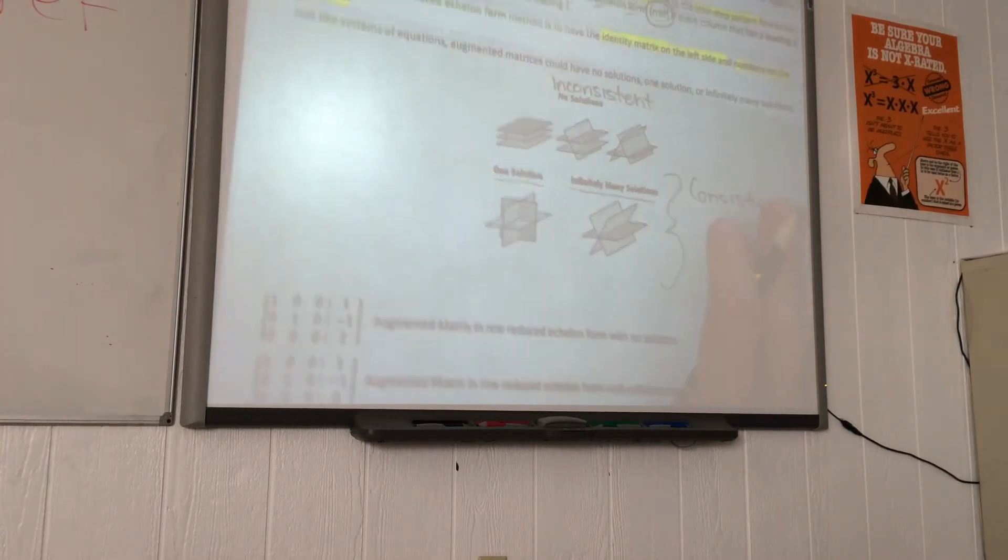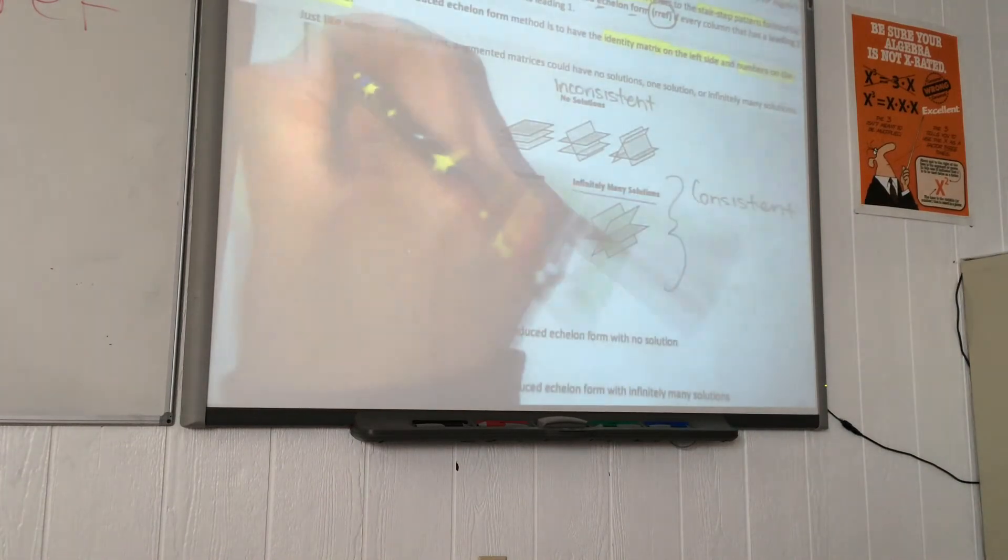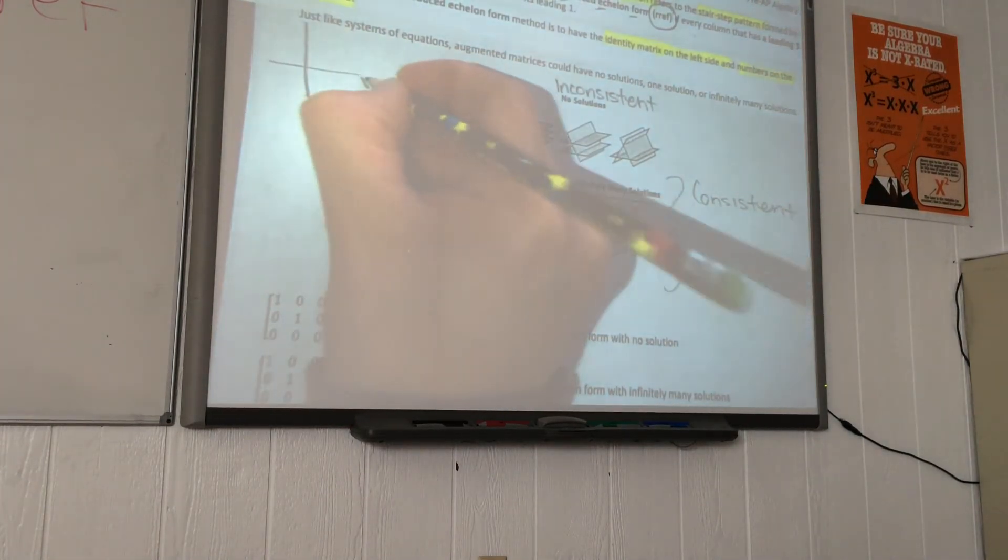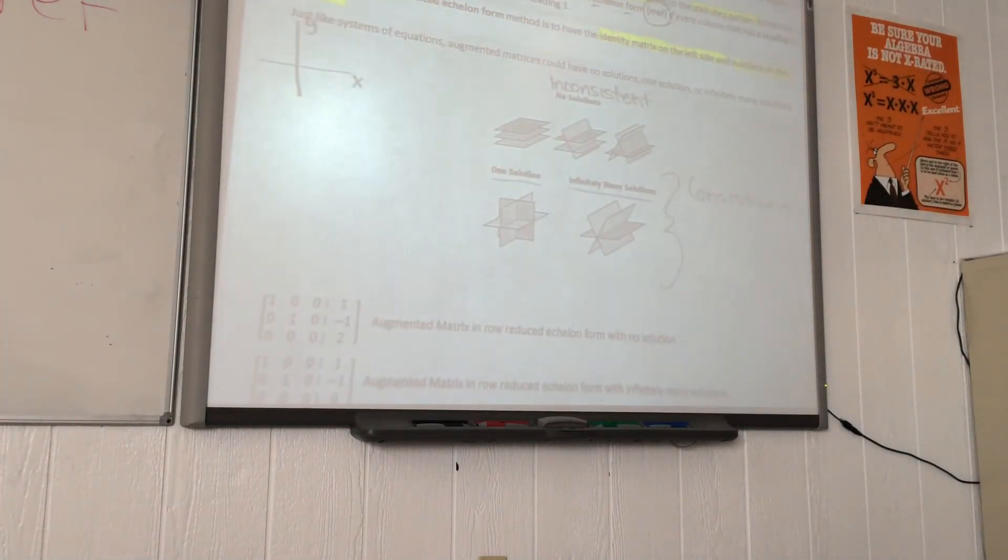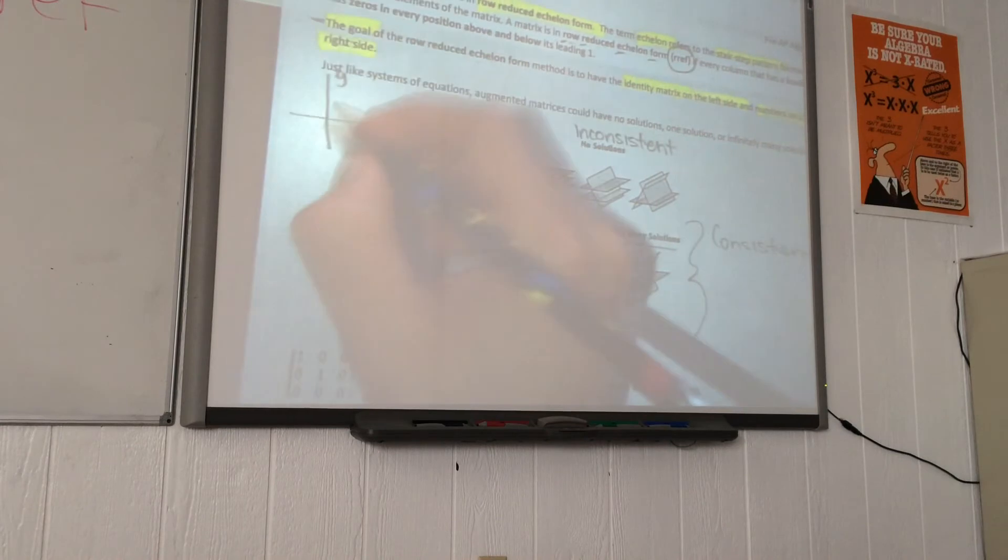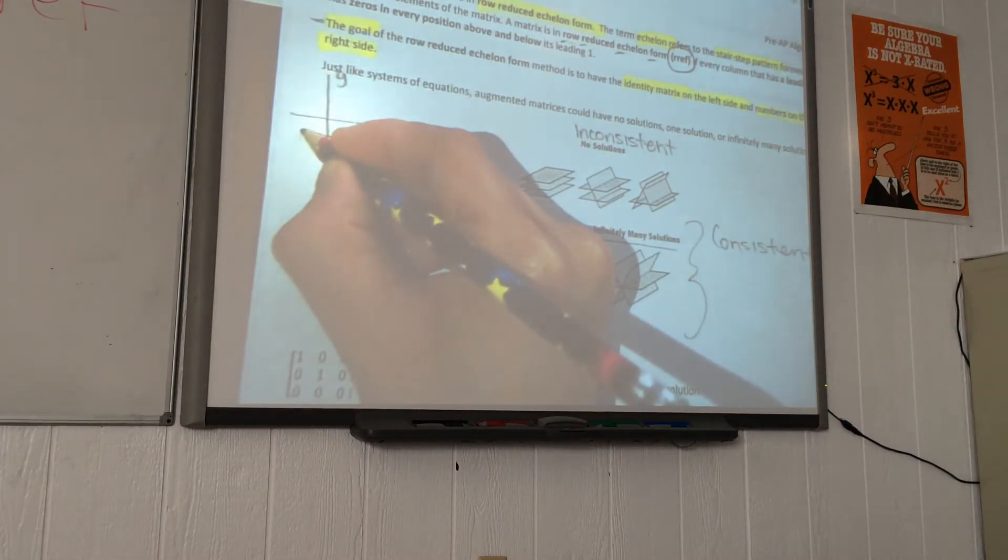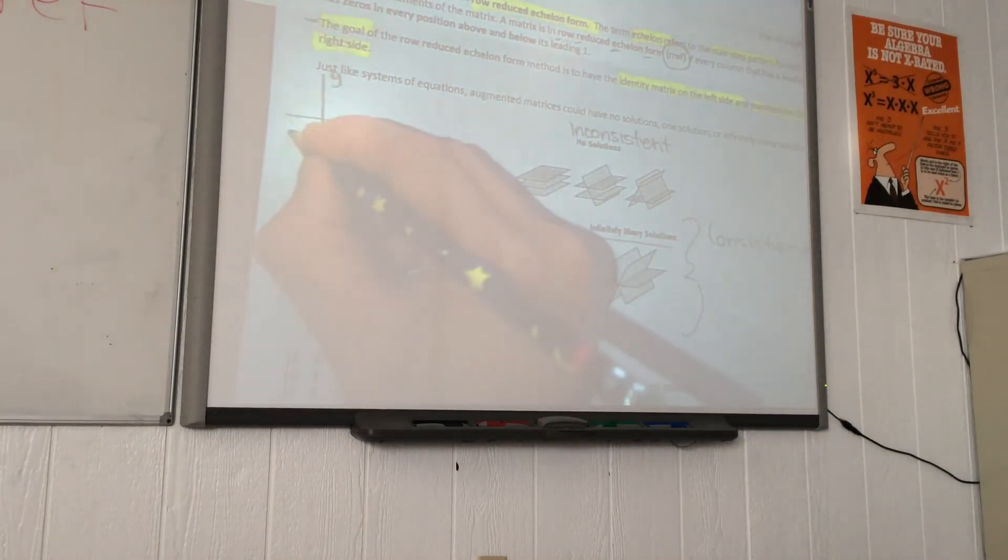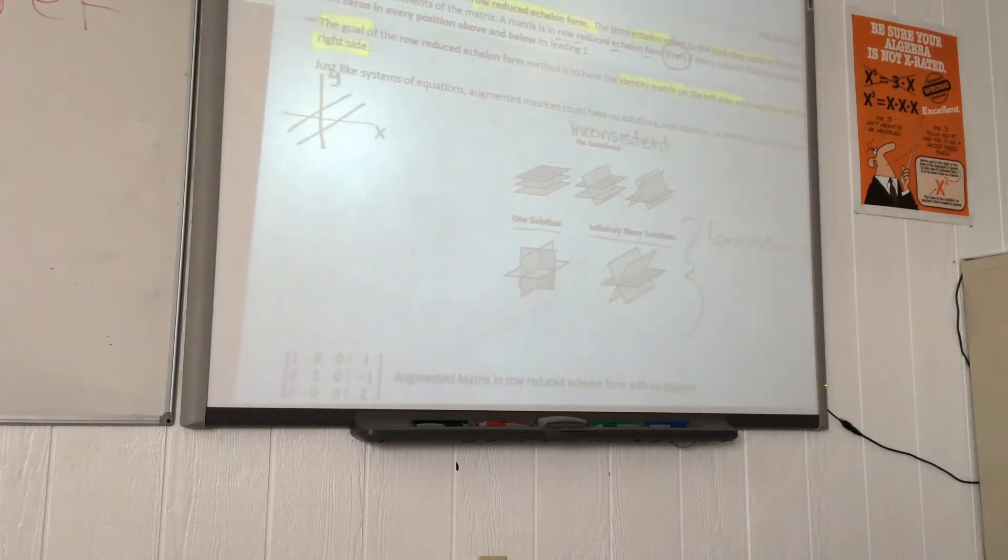When we talk about a 2x2 system, we're talking about a two-dimensional plane known as XY. A system that has no solutions in a 2x2 system, do you remember what type of lines are those? They don't intersect. So how do we call those lines? Parallels. So that will be an example.